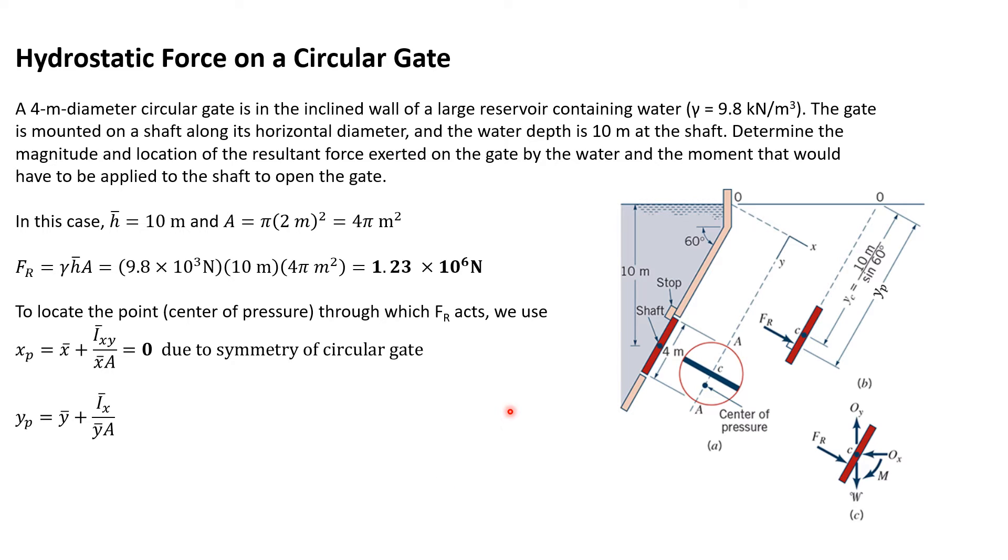Let's look at an example of finding the hydrostatic force on a circular gate. We have a four meter diameter circular gate in the wall of a large reservoir containing water. Here's the water shown in blue, here's the wall, and here's the circular gate.